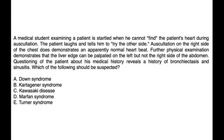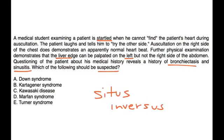Vignette 2: A medical student cannot find the patient's heart during auscultation. The patient laughs and says to try the other side. Auscultation of the right side demonstrates a normal heartbeat. Further exam shows the liver edge can be palpated on the left but not the right side of the abdomen. The patient also has a history of bronchiectasis and sinusitis. Given this situs inversus with chronic respiratory infections, Kartagener Syndrome should be suspected.